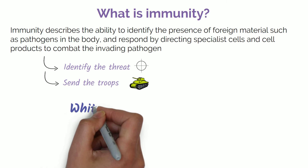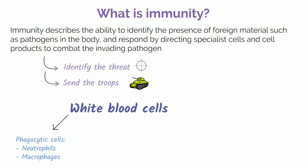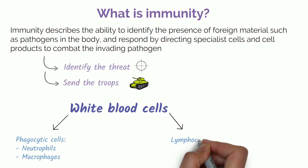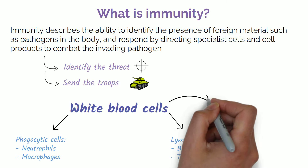White blood cells are crucial players in the war against invading pathogens. There are a few different types of white blood cell, each with a different mode of action. There are phagocytic cells called neutrophils and macrophages, and lymphocytes which are divided into two types: B lymphocytes also known as B cells, and T lymphocytes also known as T cells.